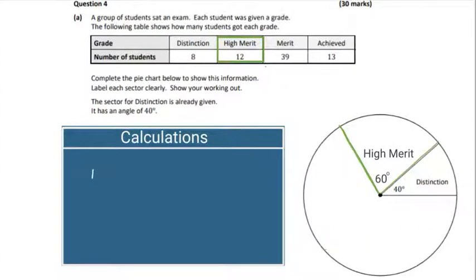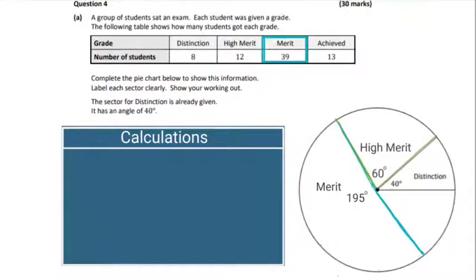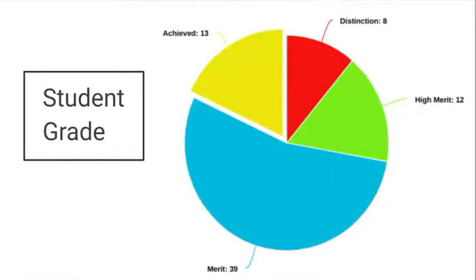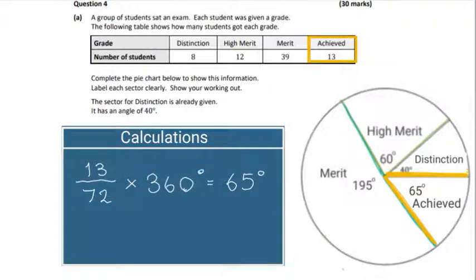For the high merit we'll get 12 over 72 multiplied by 360, which is 60 degrees. Now for the merit, the merit is 39 over 72 multiplied by 360, and that's 195 degrees. Finally, we have the achieved section: 13 over 72, which is 65 degrees. That's the full breakdown of the pie chart. Make sure you answer everything completely, marking your angles and labeling your diagram as well.